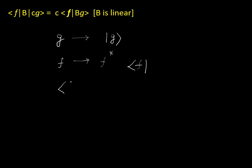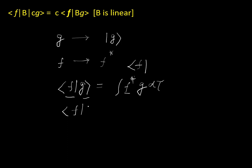It is even clearer if we take bra and ket together. ⟨f|g⟩ represents an integral where f comes as f* (from the bra) and g comes as such (from the ket), integrated d-tau. Similarly, ⟨f|B|g⟩ is equivalent to an integral of f* times the operator B operating on g, then d-tau. This is the significance of the bracket notation.